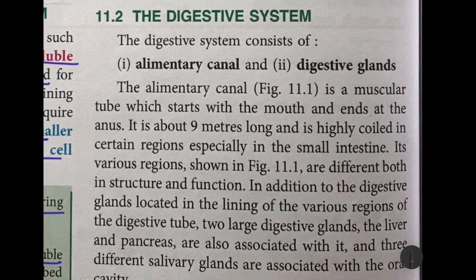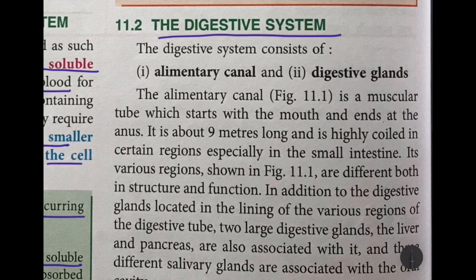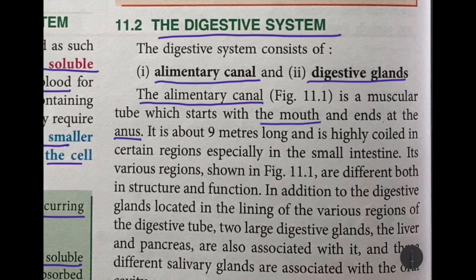Now moving on to the digestive system. The digestive system consists of an alimentary canal through which the food passes and gets digested, and the digestive glands which help in the process of digestion. The alimentary canal is a muscular tube which starts with the mouth and ends at the anus. It is about nine meters long and is highly coiled in certain areas, especially in the small intestine.